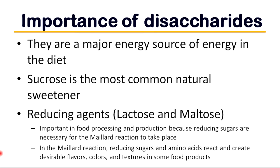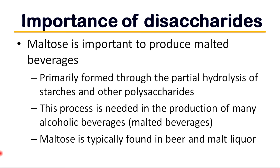Maltose is important in producing malted beverages. Maltose is primarily formed through partial hydrolysis of starches and other polysaccharides. This process is needed in the production of many alcoholic beverages, and maltose is typically found in beer and malt liquor.